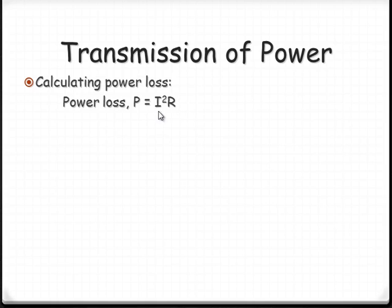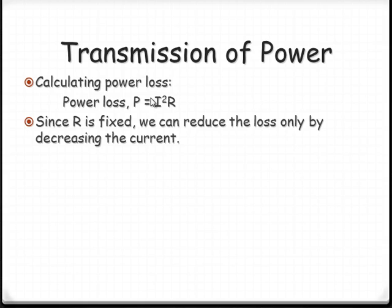Now, since I is squared, that means the larger the currents, then we get much more significant power loss. R is fixed. We can't change the resistance of the wire. So we can only reduce resistance by sending a smaller current.